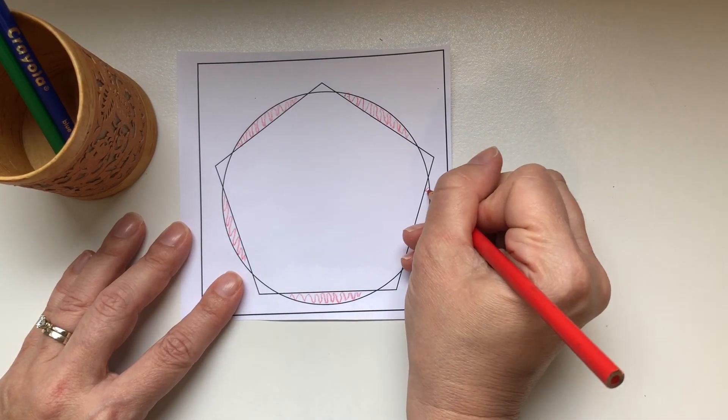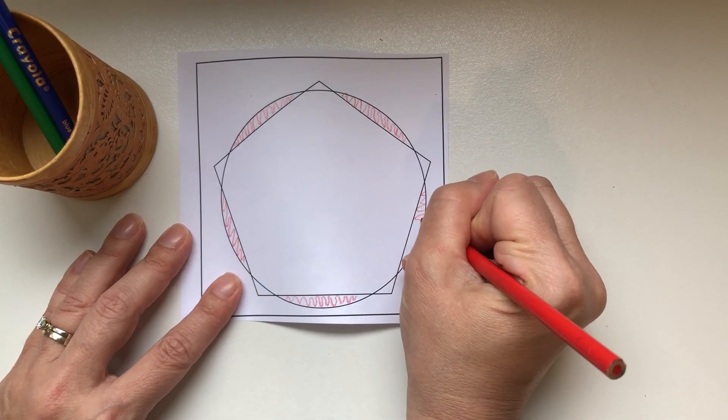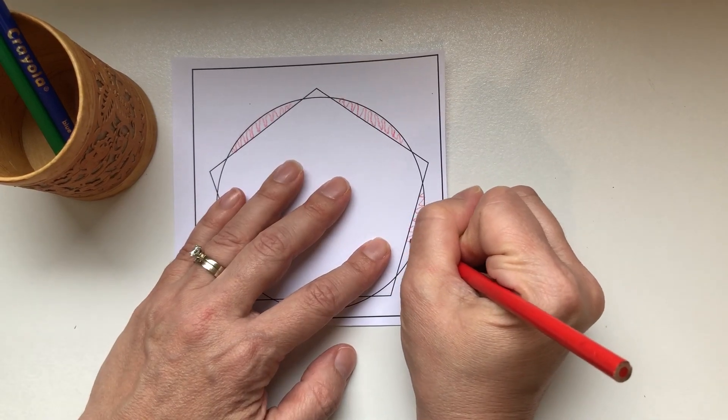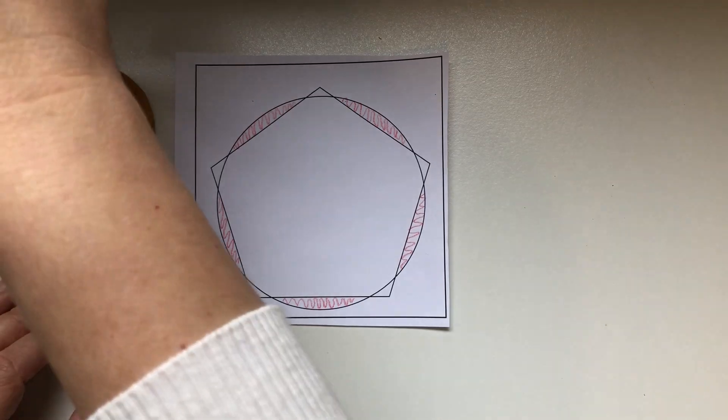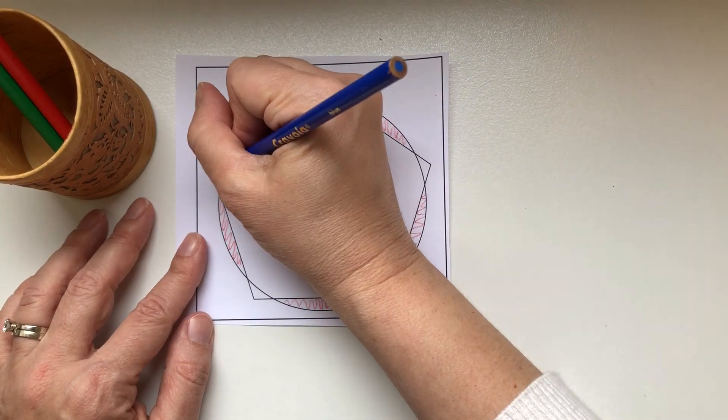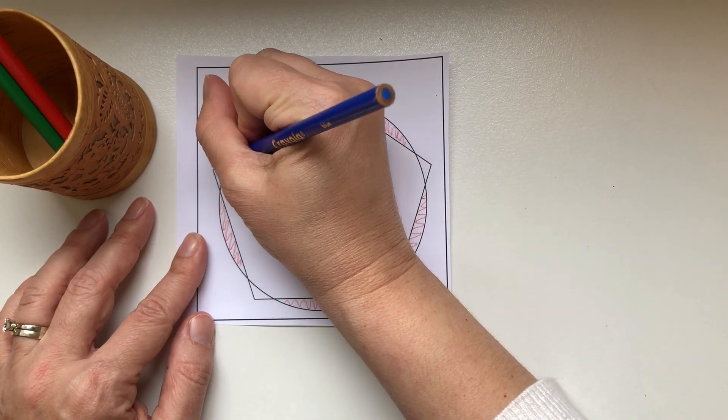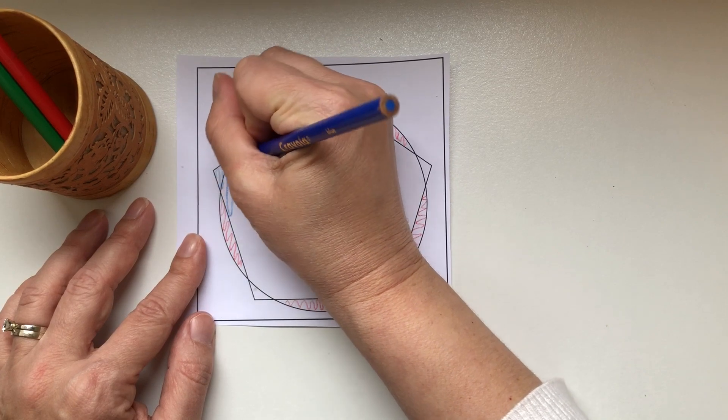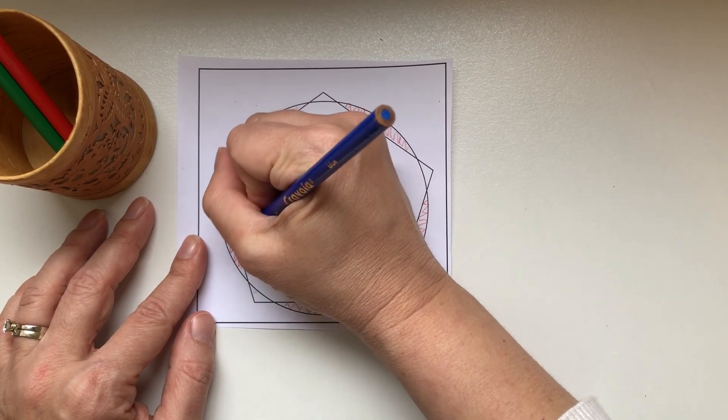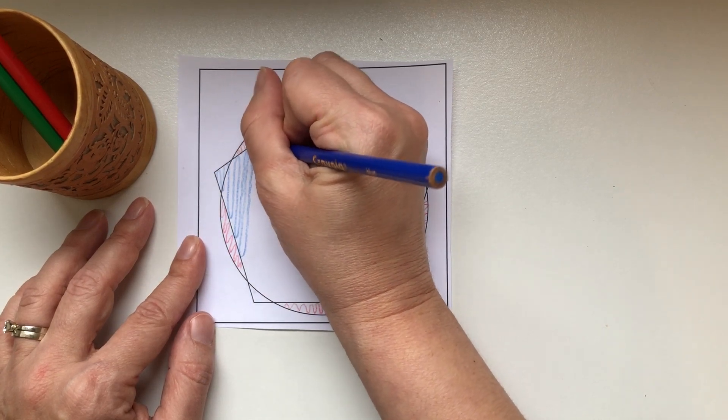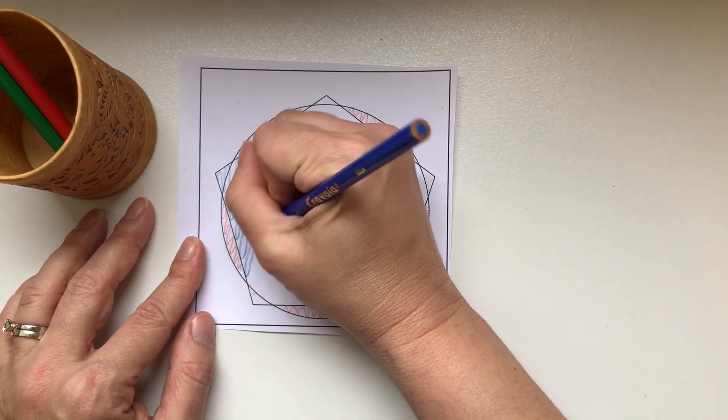And then when you have that all done, you could switch to another color for the pentagon shape and go up and down the serpentine lines until the entire shape has been shaded with serpentine lines.